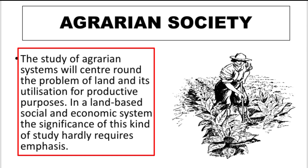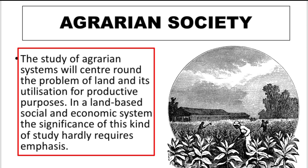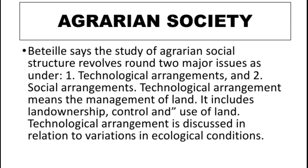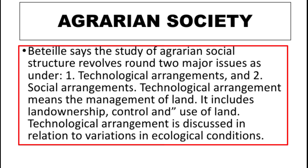First, we say that the agrarian system relates to land and its utilization for productive purposes. Second, it acts as a central problem of land and its utilization — it is a land-based socio-economic system. The problem of land and its utilization is especially significant in India.